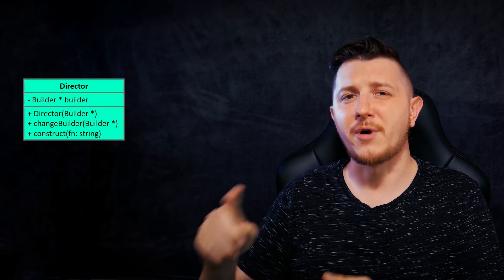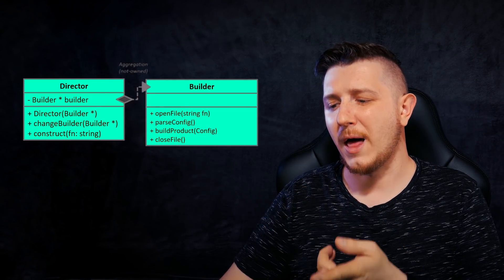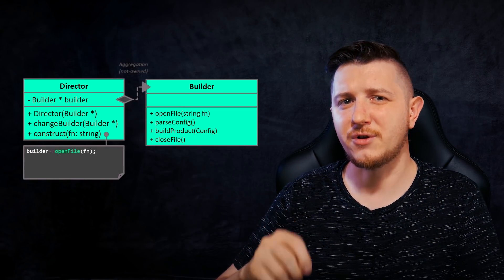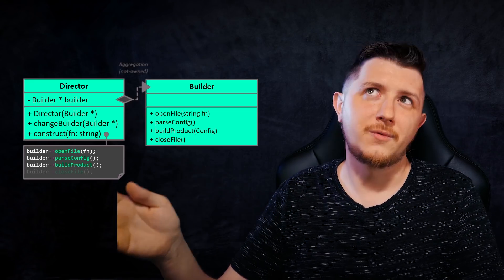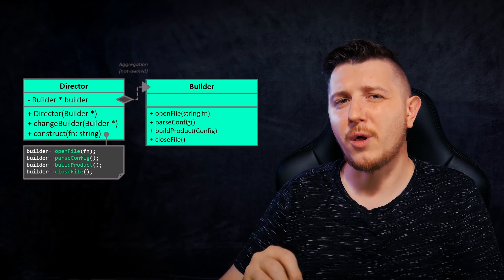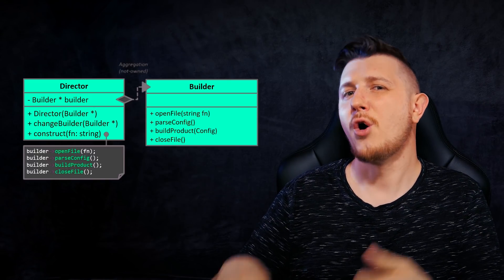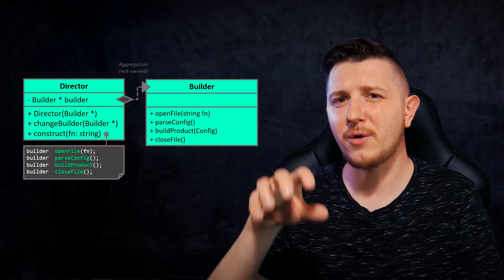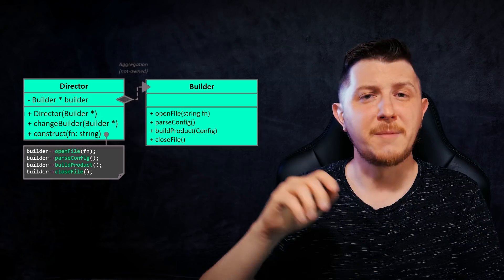Builder will be constructing our object, and director will know how — it will know all of the steps. So we create a class called director that will store a reference to the builder, and it will have a method called construct. Within the construct method we store all of the steps that we need to do, which basically means we call all of the builder's methods responsible for opening the file, reading the config, creating an object, and then closing it.